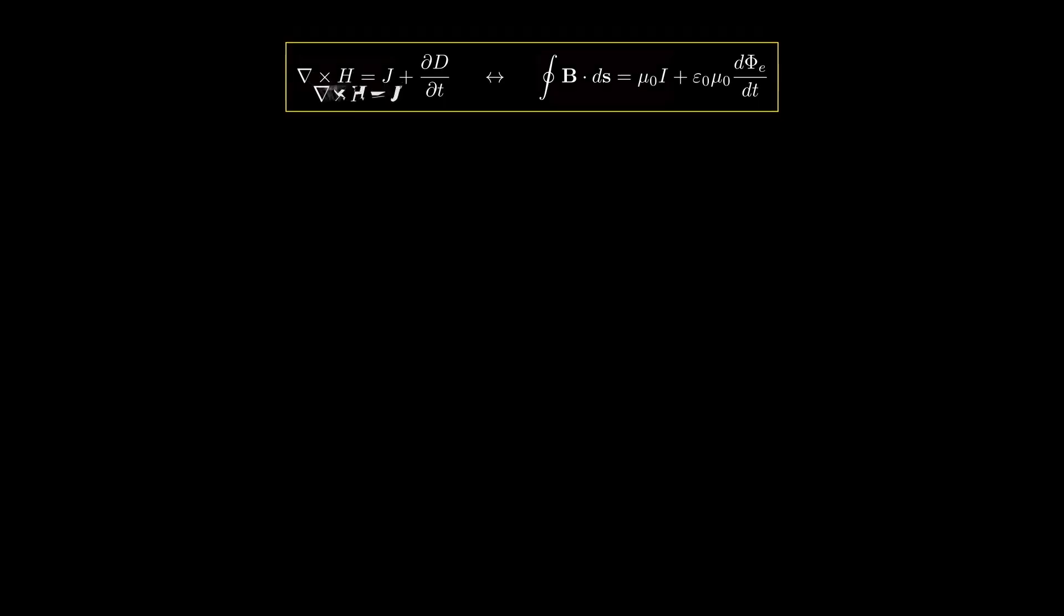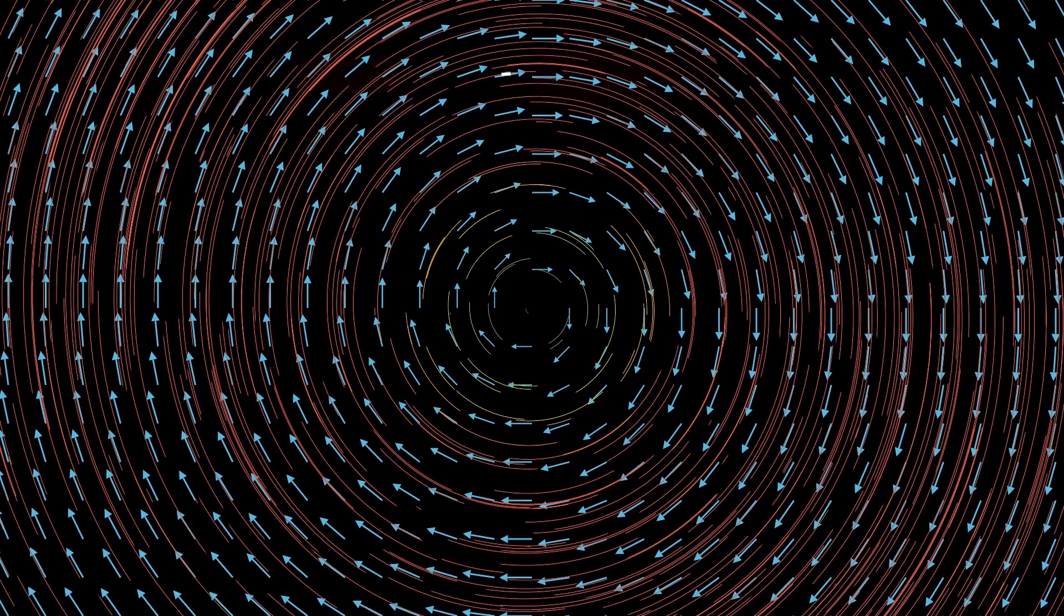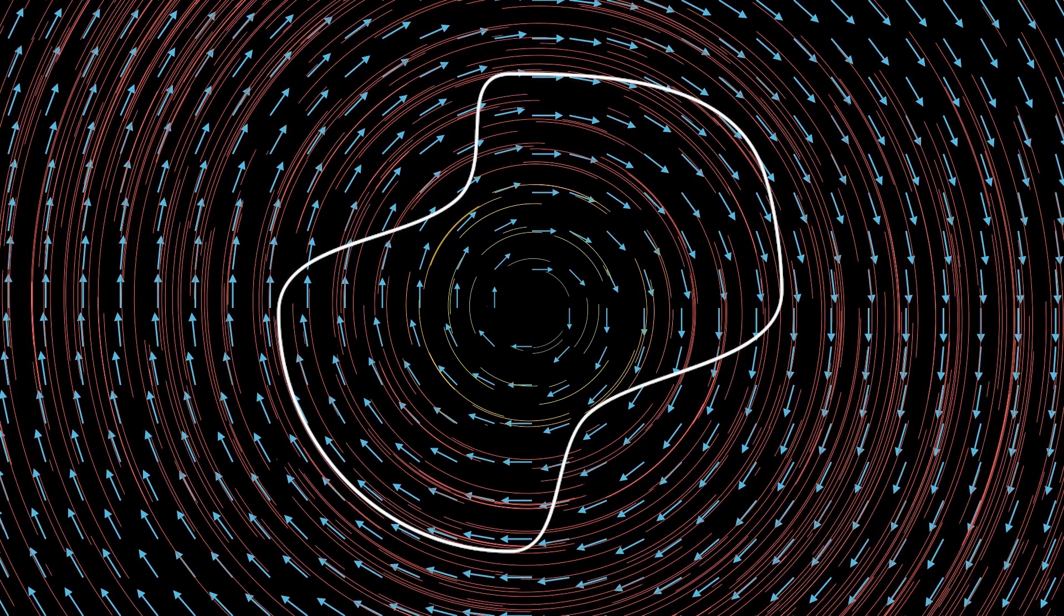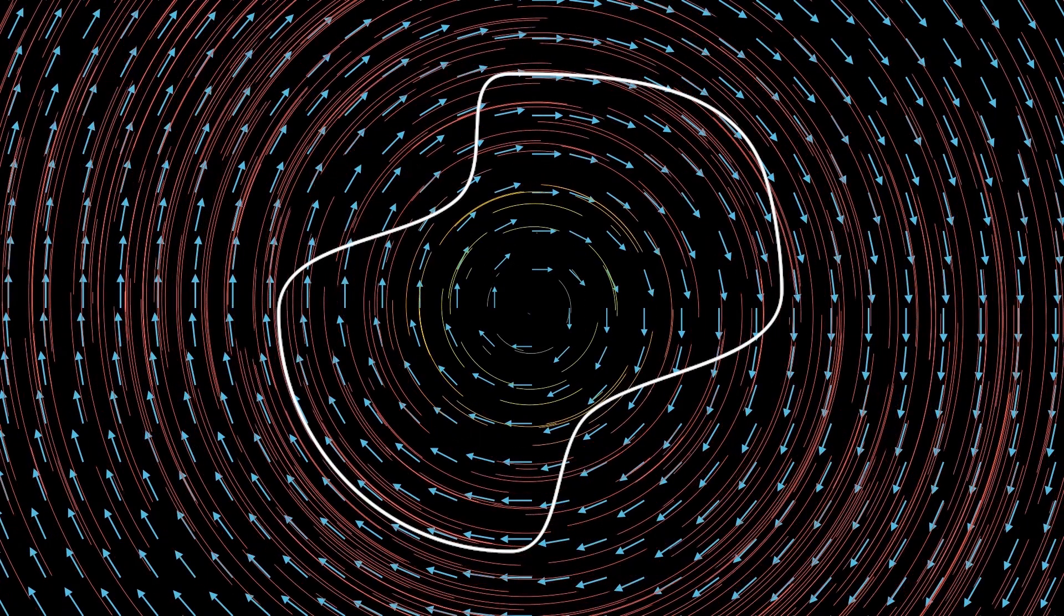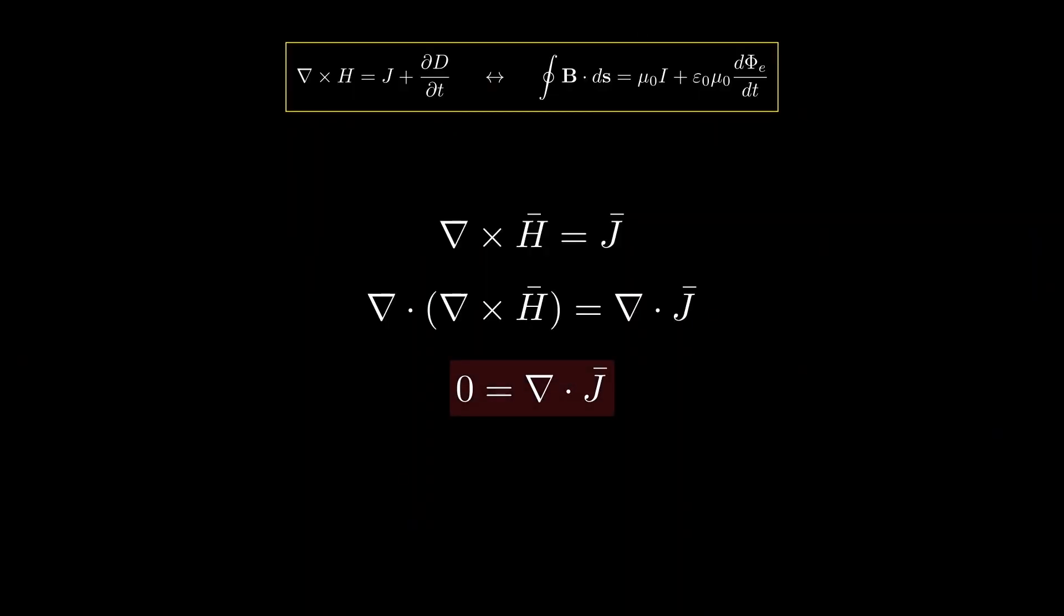If we take the divergence of both sides of Ampere's law, the left-hand side would be zero, because the divergence of any circulating vector field is always zero. The amount of field entering any closed surface is equal to the amount of field exiting, so the divergence of curl is zero. So we get the divergence of current density is zero. That result is inconsistent with the continuity equation. So Ampere's law doesn't satisfy the continuity equation.